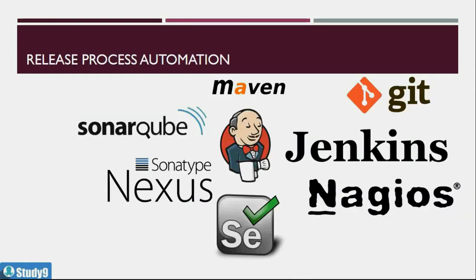After the infrastructure provisioning part, we will also look at release process automation. Since people have been developing software, there has always been a method to convert code into an application and release it to production, but it has mostly been done manually in the past with automations used occasionally. Now in the new age we are talking about automating this process end-to-end, and our main orchestration tool for that is Jenkins.